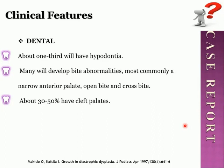Regarding dental features of Diastrophic Dysplasia: approximately one third of these patients have hypodontia, and many develop bite abnormalities. The most common include a narrow anterior palate, open bite, and crossbite. About 30 to 50 percent of these patients will have a cleft palate.